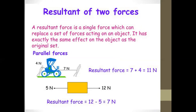First case: if these forces are parallel. We have two sub-cases — if the two forces are in the same direction, and if the forces are in the opposite direction. First sub-case: if the two forces are in the same direction, say an object has one force of 4 Newtons and a second force of 7 Newtons in the same direction. The resultant force equals the sum of the two forces: 7 plus 4 equals 11 Newtons.